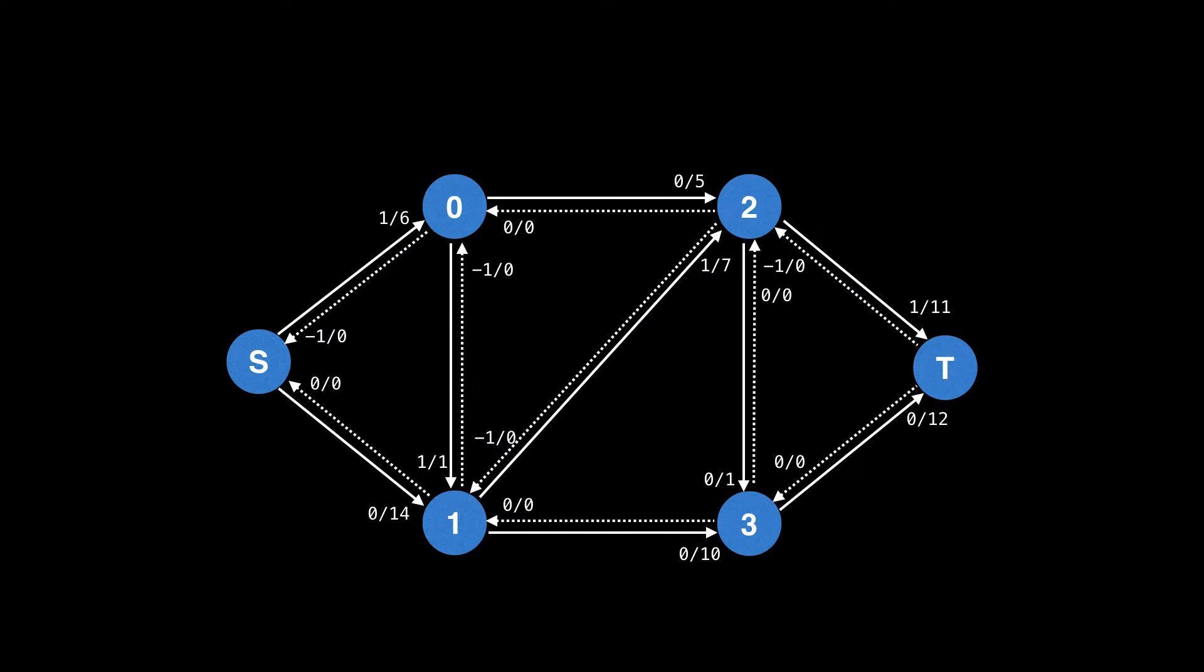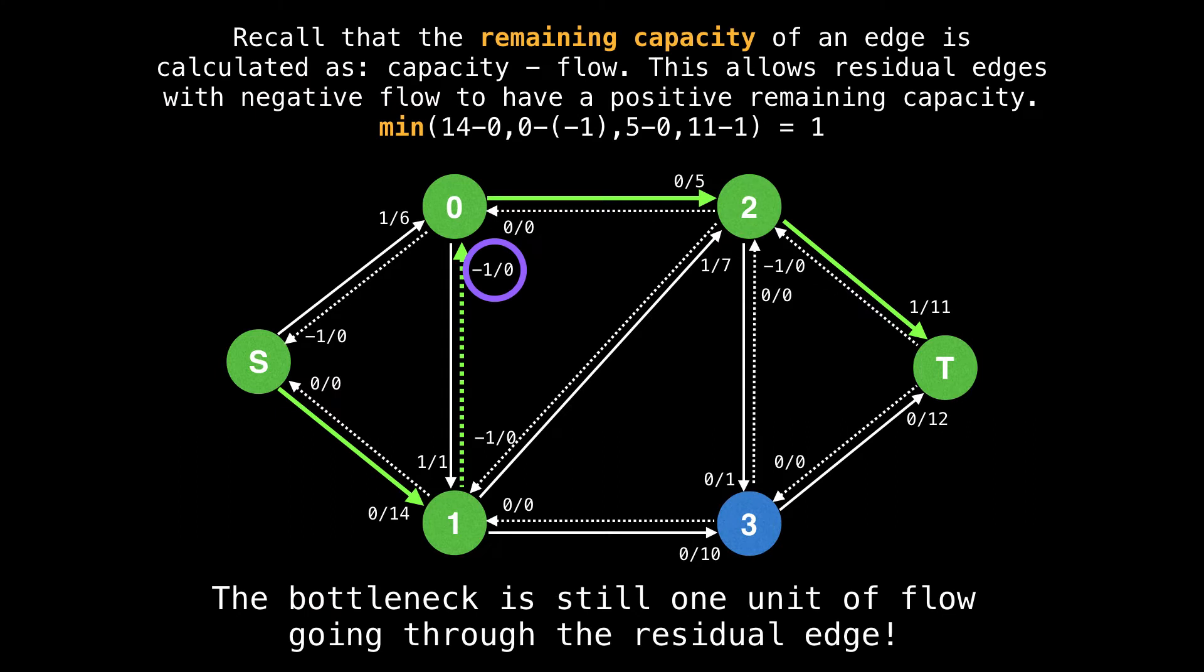However, we're not done. So we're going to start once again at the source and start finding another path. Suppose this time we take the edge going down, then take the residual edge going up and sideways, and then down again. And now we have found another augmenting path and we can find its bottleneck value.